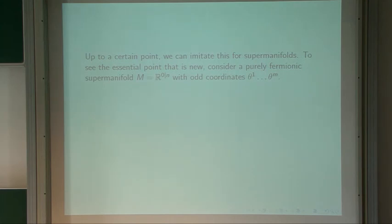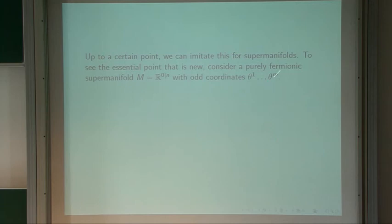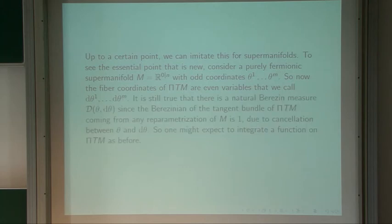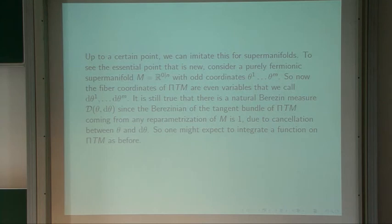Up to a point we can imitate this for supermanifolds, but there's one important difference which leads to picture number. To see the essential new point, consider a purely fermionic supermanifold R^{0|n} with odd coordinates theta1 through theta_n. The fiber coordinates on pi(TM) will be variables of opposite statistics from the thetas, so they will be even variables d-theta1 through d-theta_n. There's still a natural Berezin measure for integration over theta and d-theta, because the Berezinian of the tangent bundle of pi(TM) is one, due to cancellation between theta and d-theta.